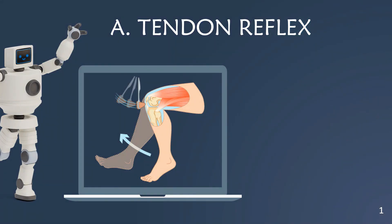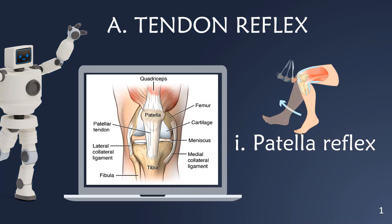Experiment 12.2 is divided into 2 parts. Part A, Tendon Reflex. First of all, we are going to have a look at Patella Reflex. Patella tendon is the structure that connects the patella or kneecap to the tibia.